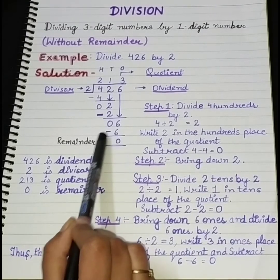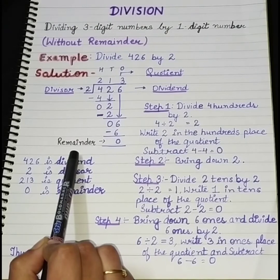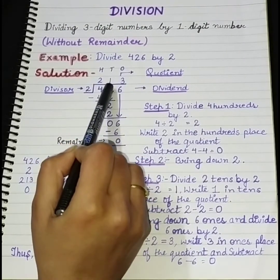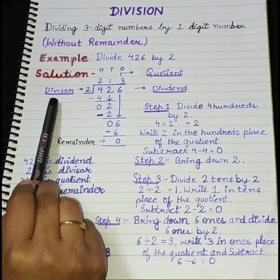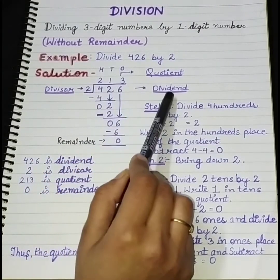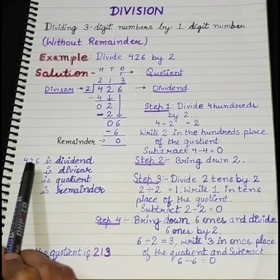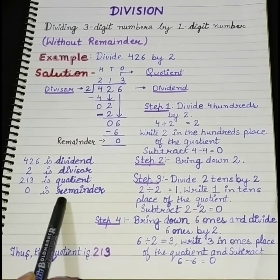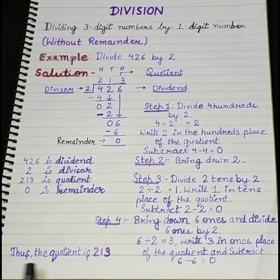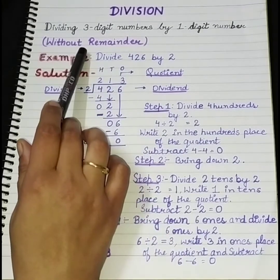The remainder is the number we are left with at the end. The answer we call the quotient, the number which divides we call the divisor, and the number that is being divided we call the dividend. So once it is solved: 426 is the dividend, 2 is the divisor, 213 is the quotient, and 0 is the remainder. In this way, children, you do division of a three-digit number by a one-digit number without remainder.